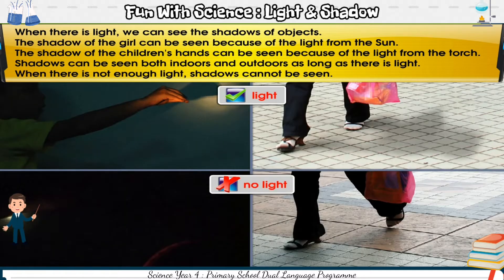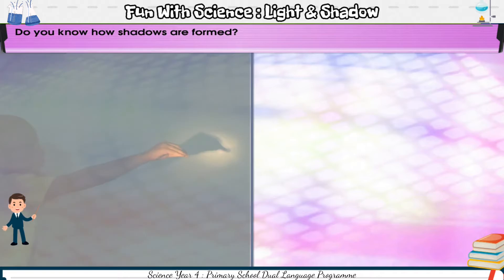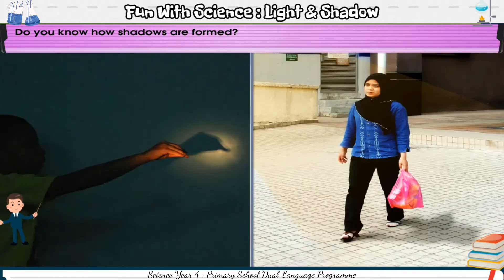When there is not enough light, shadows cannot be seen. Do you know how shadows are formed?